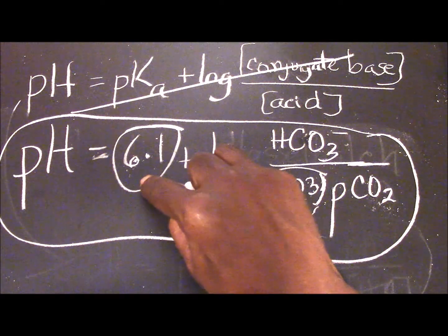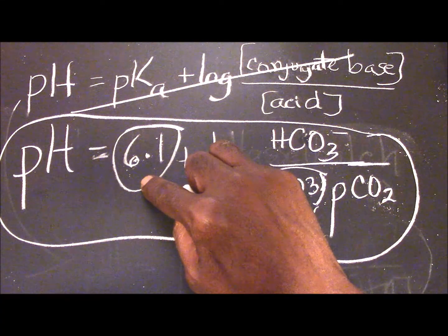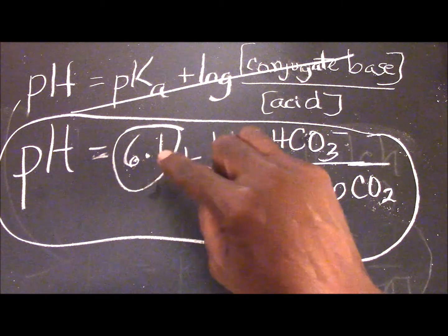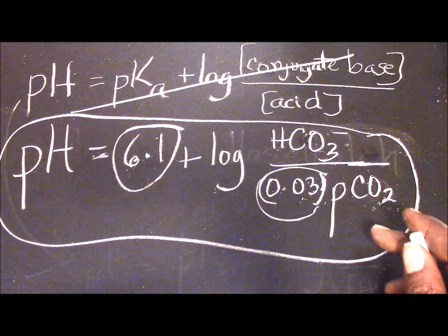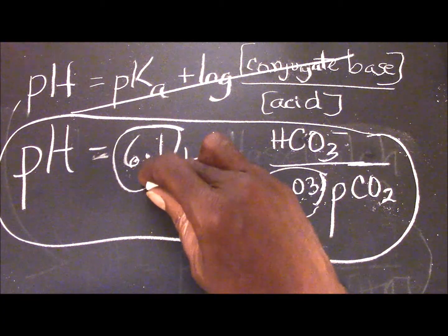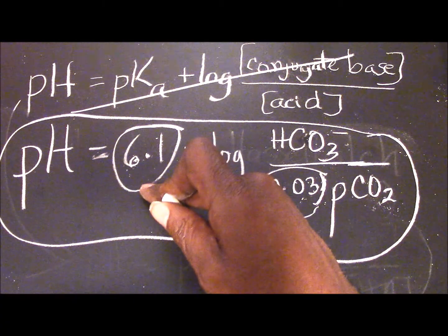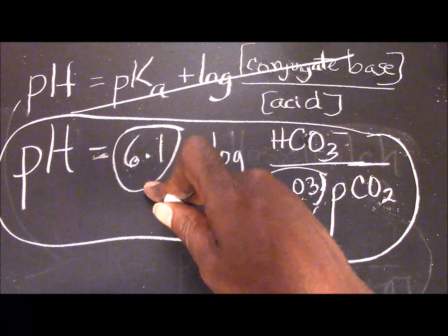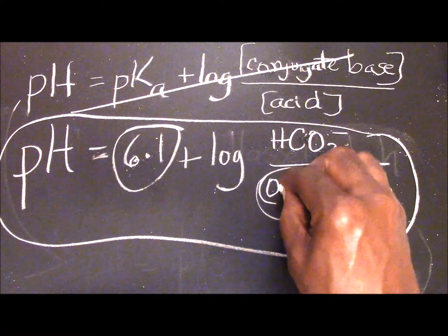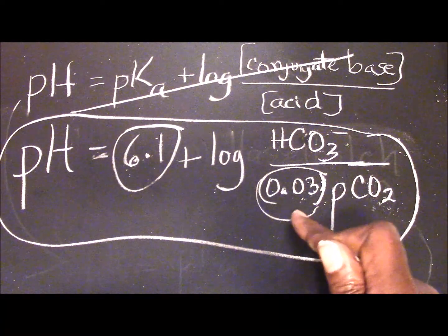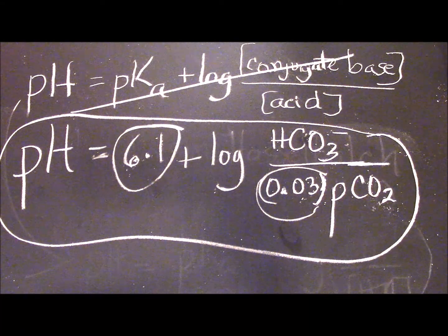The 6.1 here actually represents the pKa of the bicarbonate buffer solution. Speaking of the bicarbonate buffering system, it is the largest in the extracellular fluid in terms of quantity. So the 6.1 here represents the combined hydration and dissociation constants for carbon dioxide in blood at 37 degrees centigrade. On the other hand, the 0.03 represents the solubility coefficient for carbon dioxide gas in the blood at 37 degrees centigrade.